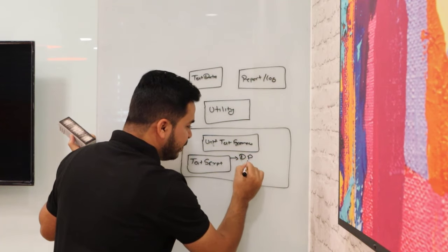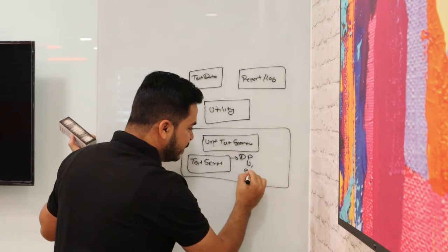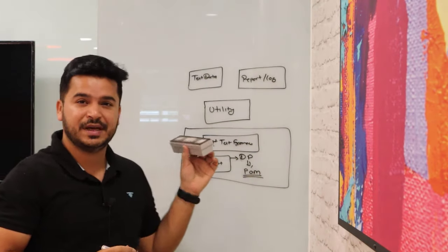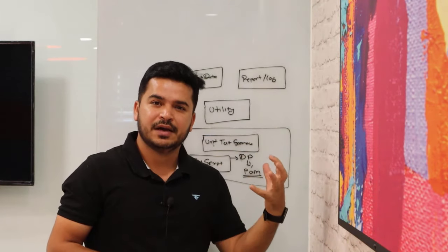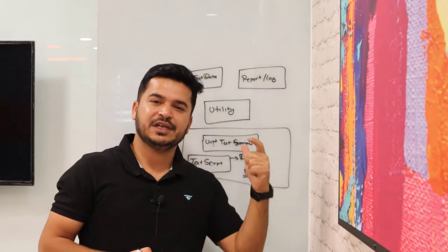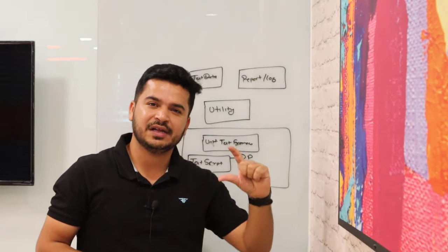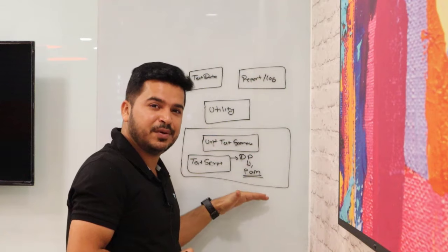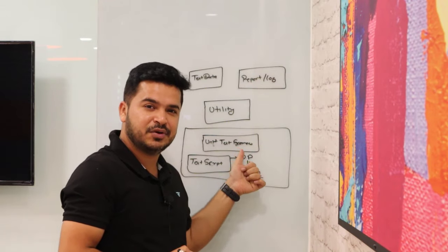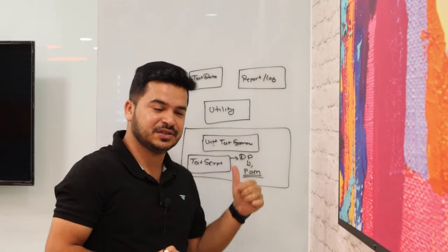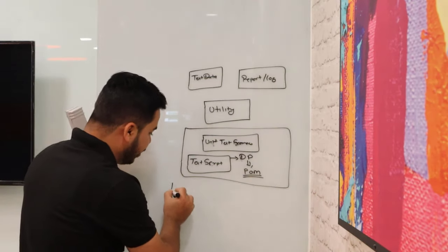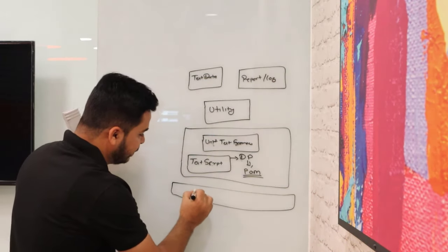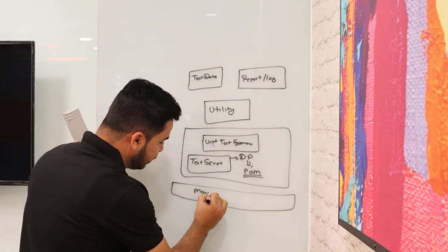In design pattern, you can explain about the Page Object Model. In the Page Object Model, we will be creating different pages — depends on how many HTML pages we have. Based on each page we will create each Java class with methods. So in this test script component you need to explain: we are using Page Object Model, we are using unit test framework which is TestNG. Then you need to explain that we are using Maven, which is a build tool.